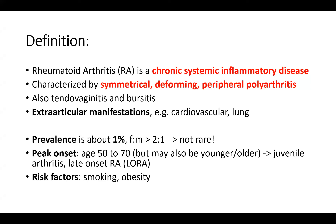The prevalence is about 1%, more ladies than men, so it's not rare, and you will definitely see patients who suffer from this condition. The peak onset is age 50 to 70, but it may also be present in younger or older patients. There is juvenile arthritis, which can start in kids as young as 1 or 2, and there's a late-onset form called LORA, late-onset rheumatoid arthritis.